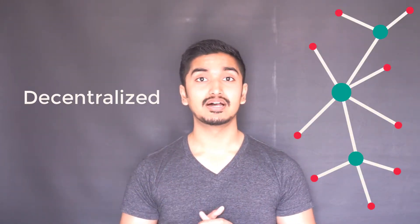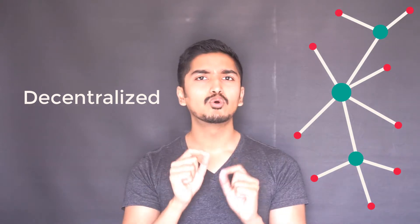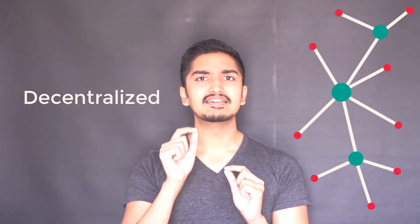Next is the decentralized. Over here, you have a few more central nodes, but if one or two of them gets lost, then basically everything gets lost except a handful of points. That is decentralized.